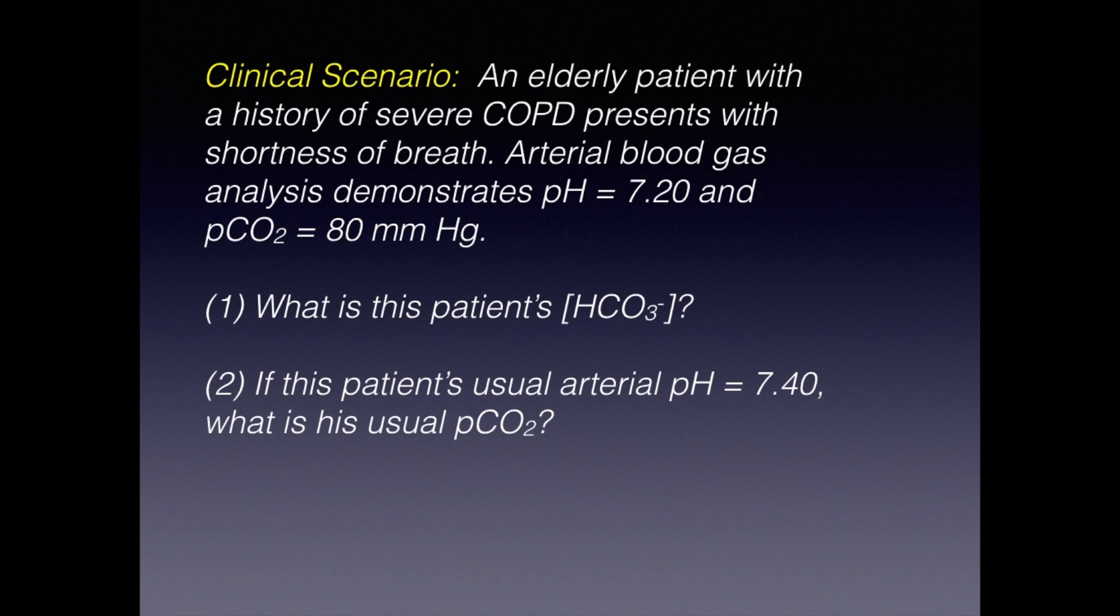An elderly patient with a history of severe COPD presents with shortness of breath. Arterial blood gas analysis demonstrates pH equals 7.20 and pCO2 equals 80 millimeters of mercury. The first question is what is this patient's serum bicarbonate level? The second question asks if this patient's usual pH equals 7.40, then what is his usual pCO2?